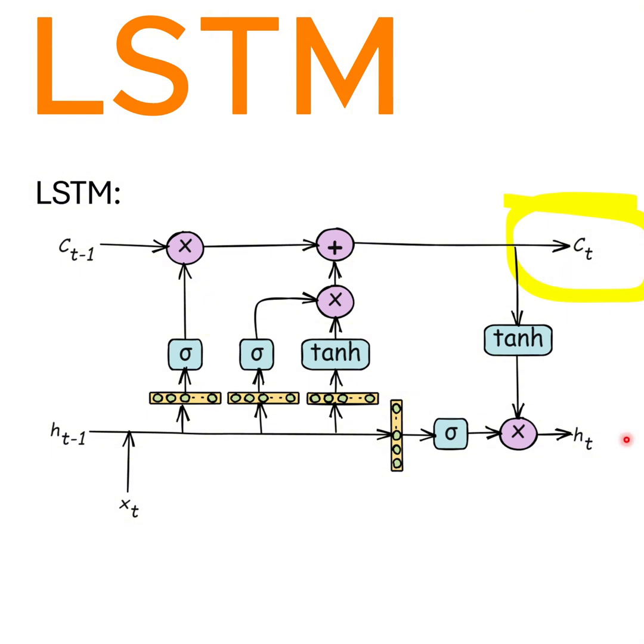This part is the forget gate of the LSTM. It controls how much of the previous cell state should be carried forward. Even though its name is 'forget gate,' it actually controls how much to remember from long-term memory.